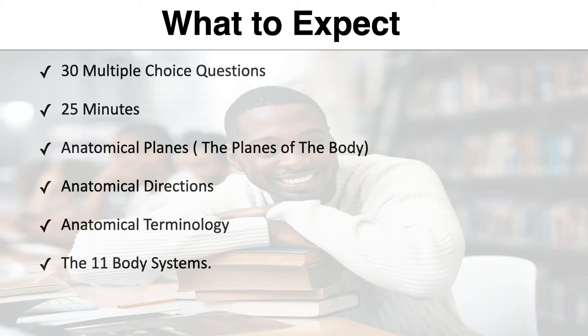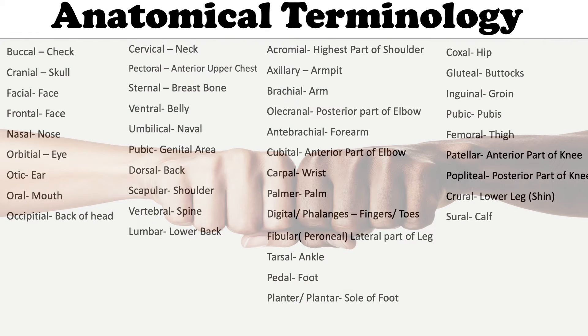You will be tested on anatomical planes, anatomical directions, and anatomical terminology. You need to know the 11 systems of the body — they will test you thoroughly on that topic. On the HESI, you need to know just the basics of medical terminology and a little bit of anatomy and physiology terminology.